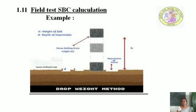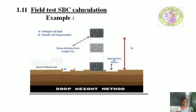Moving on to the determination of safe bearing capacity of the soil, there are several methods. The methods include: plate load test, dropping weight method, penetration test method, method of loading, and using presumptive values for bearing capacity of the soil. So there are four to five methods for the determination and calculation of the safe bearing capacity of soil.